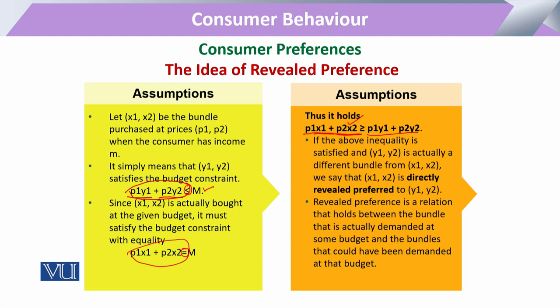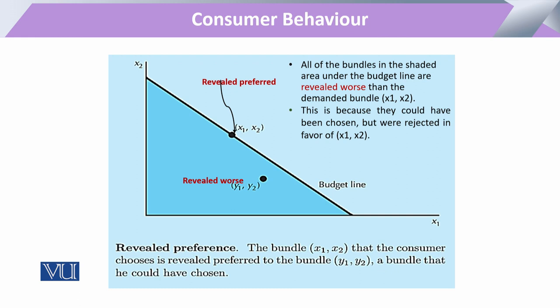Yahan par jo sign lagaya hai woh equality ka hai — equal bhi ho sakta hai aur less bhi ho sakta hai. Agar hum assess karein to possible hai ke wo bundle jo usne purchase kiya hai X combination ka, wo Y ke muqable mein thoda sa expensive ho, lekin despite this fact, consumer apni preference ki base pe is bundle ko purchase kar leta hai. Agar hum ek diagram ki shakal mein dekhein, bundle X1 X2 jo consumer ne pasand kiya — that is called revealed preferred — over bundle Y1 Y2.